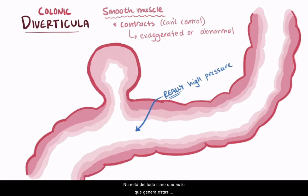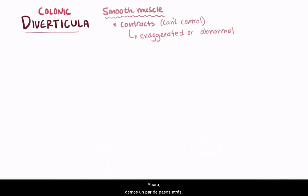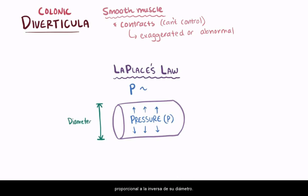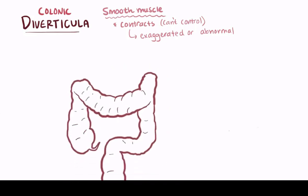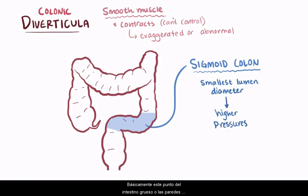It's not quite clear exactly what leads to these abnormal contractions, but some studies suggest it might have something to do with the smooth muscle itself. Now let's think about Laplace's Law, which says that the pressure on the wall of a cylinder is proportional to the inverse of its diameter. So as diameter decreases, pressure increases — a really small cylinder is going to feel a lot more pressure on its walls than a really large cylinder. Since the sigmoid colon is the smallest portion of the colon in diameter, it's subject to relatively high pressures according to Laplace's Law, making it the spot in the large intestine where the walls get pushed on the hardest. The sigmoid colon is therefore where most diverticula form.